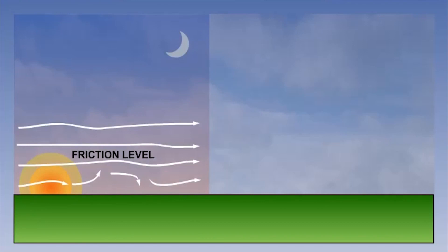As a result of the thermal effect, we should be able to notice a diurnal change in the friction layer and the friction level. When the land is at its coldest, usually just after sunrise, the friction level will be at its lowest.